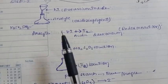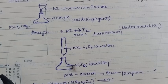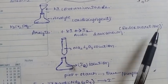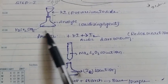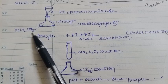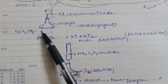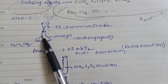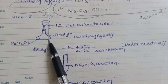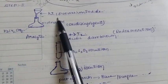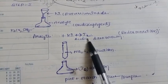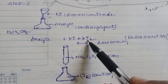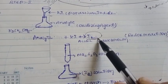In iodimetry, we can identify the oxidizing agent in one direct step. In iodometry, it is indirect and involves two steps. In the first step, the analyte — which is dichromate — is reacted with the reducing agent, potassium iodide, under acidic medium conditions. This produces iodine solution, which is the oxidizing agent and forms a dark brown color.